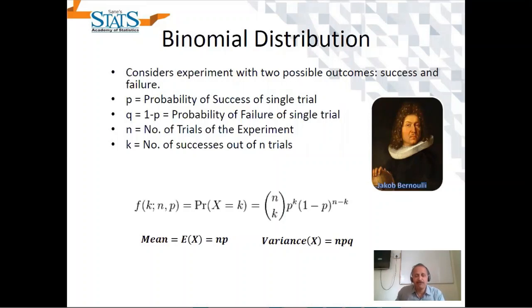Where P is probability of success, Q is probability of failure, N is number of trials, and K is number of successes.